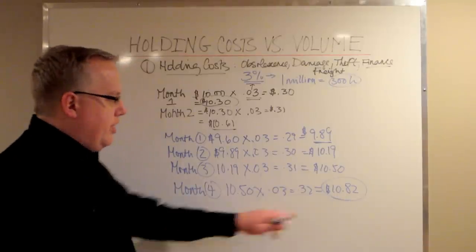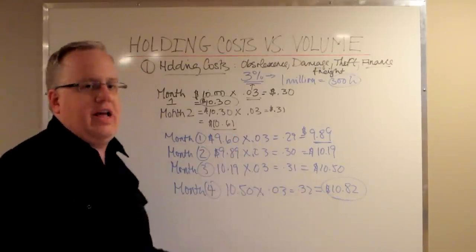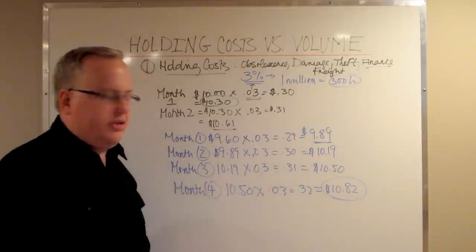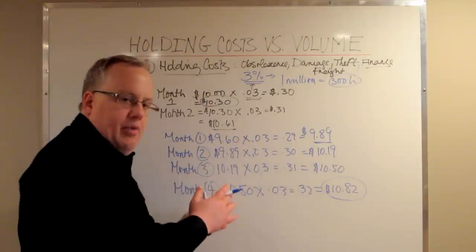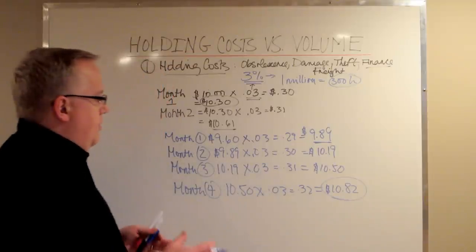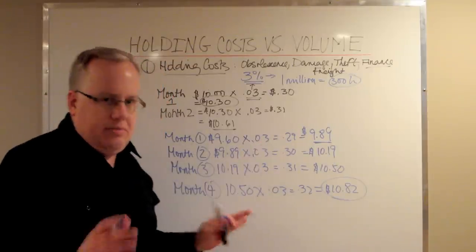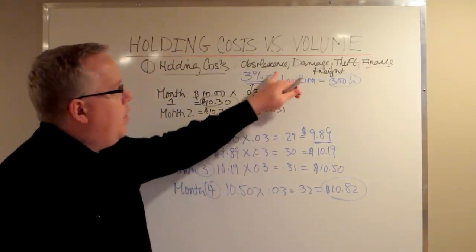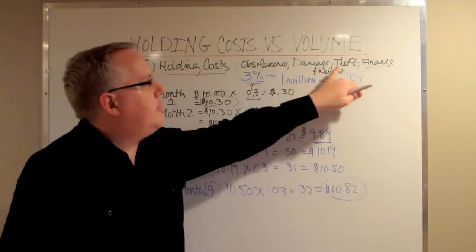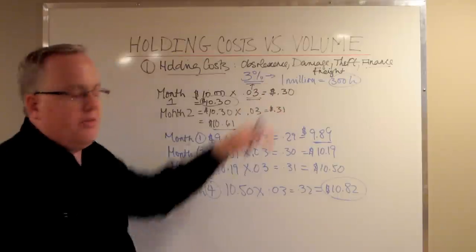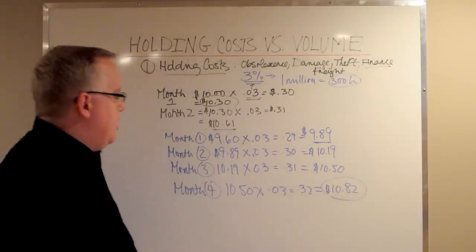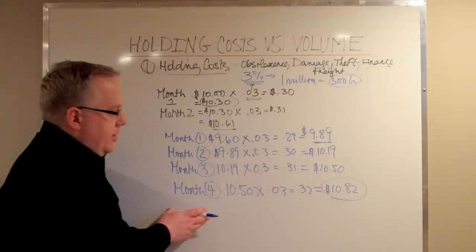Now yes, by the fourth month, that $10.82 is higher than the $10.61. In that case, you're talking about a $0.21 delta between not buying too much and buying more and using your economies of scale. Now, admittedly, these are hidden costs. But when you track the cost of obsolescence, damage, freight, the incoming freight costs, the cost of theft, and the cost of financing, 3% is an average. In fact, there's a lot of companies that are at 4% or 5%. So this is not unrealistic.